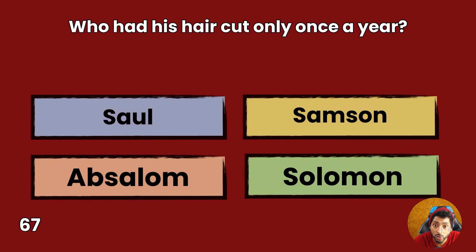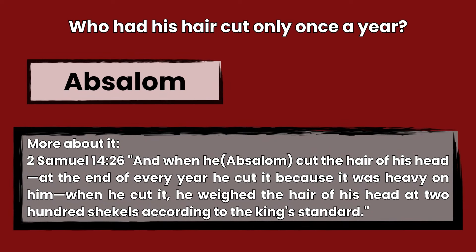Question 67: Who had his hair cut only once a year? Saul, Samson, Absalom, or Salmon? Answer: Absalom. 2 Samuel 14:26 — And when he, Absalom, cut the hair of his head, at the end of every year he cut it because it was heavy on him. When he cut it, he weighed the hair of his head at 200 shekels according to the king's standard.